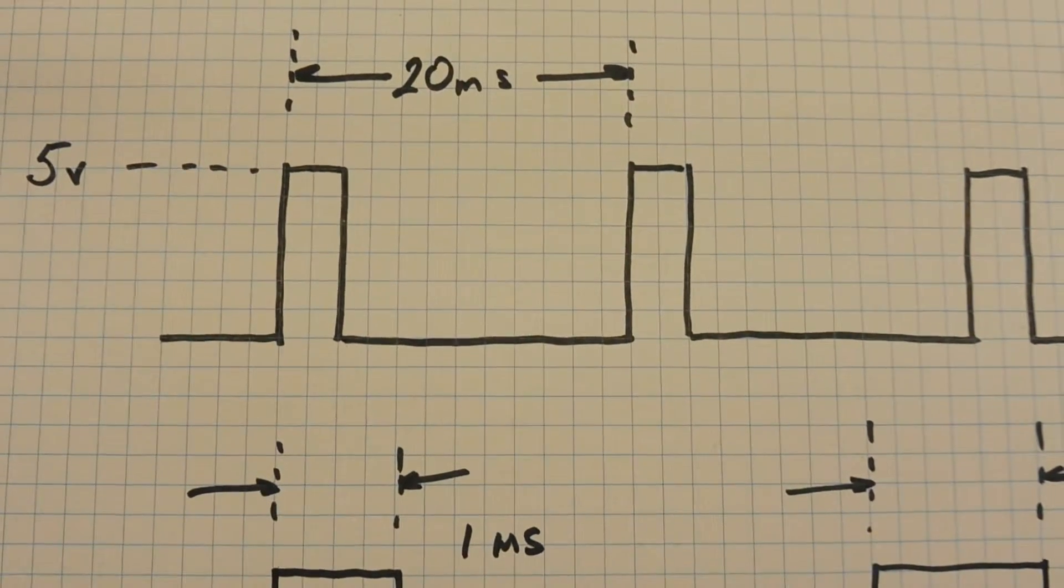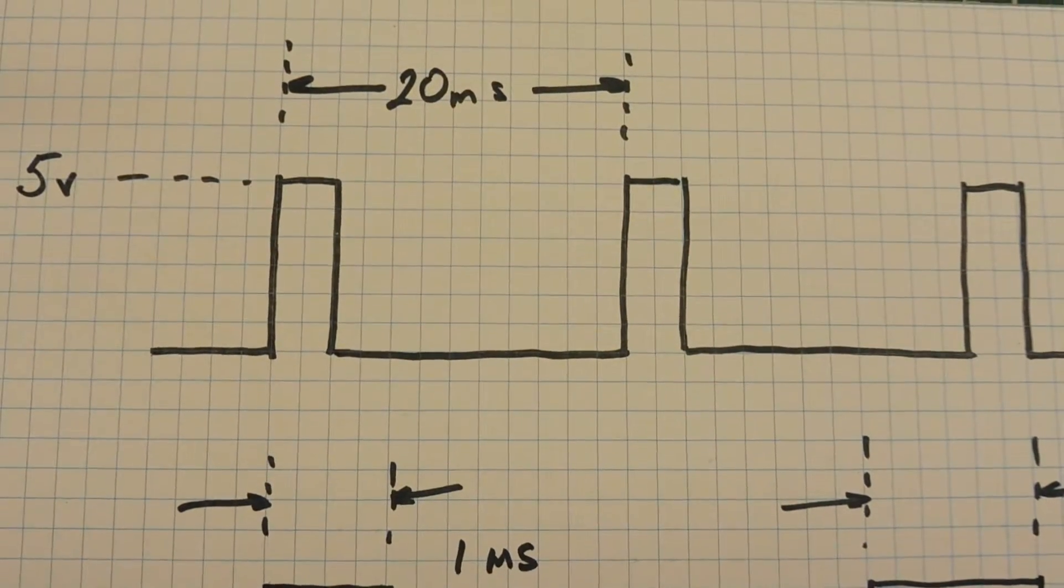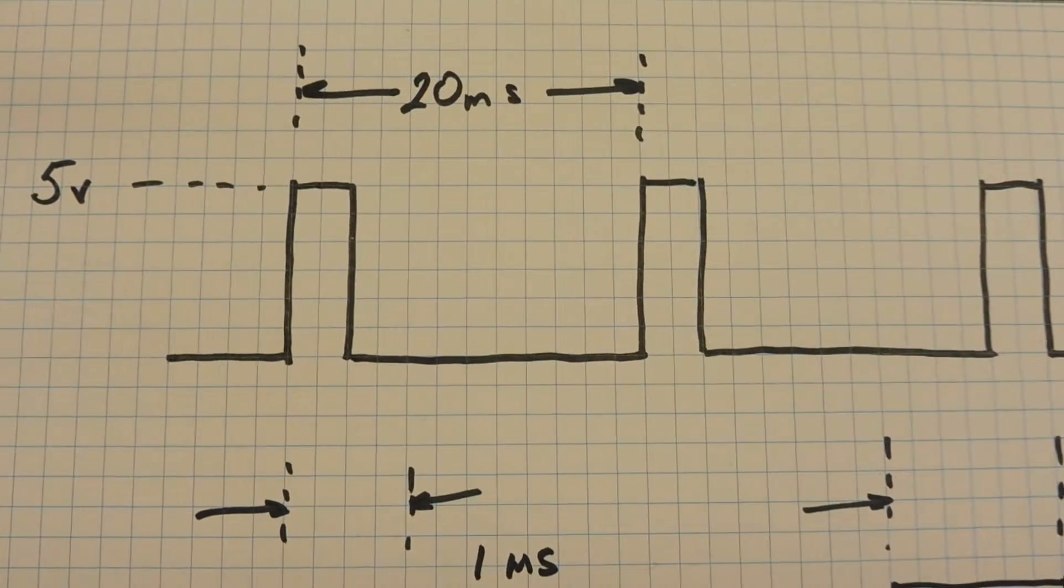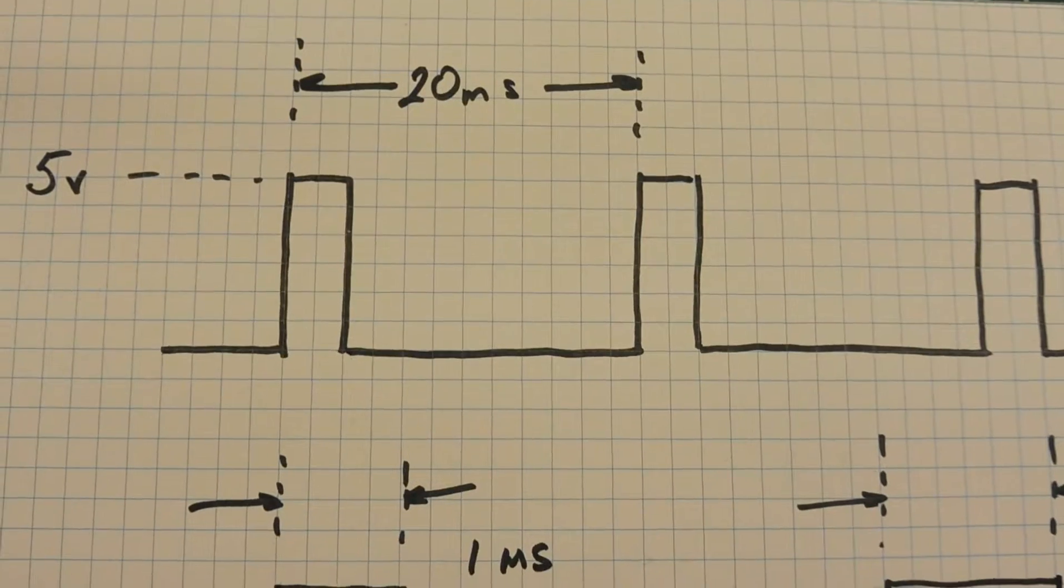Okay, now we're going to look at how to drive the control line of the servo motor. Basically, we send 5 volt pulses every 20 milliseconds continuously, and that works out to a frequency of 50 hertz, but the pulse width is what actually controls the position of the servo.